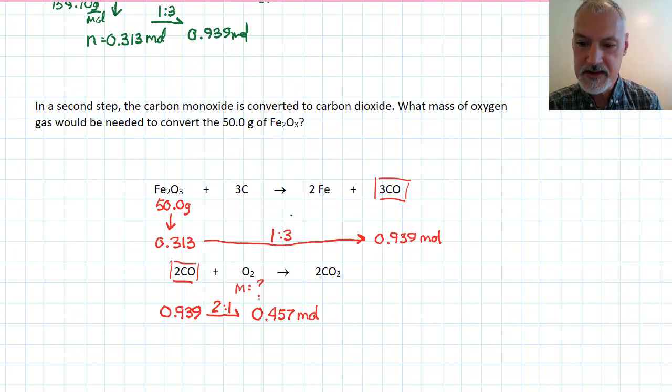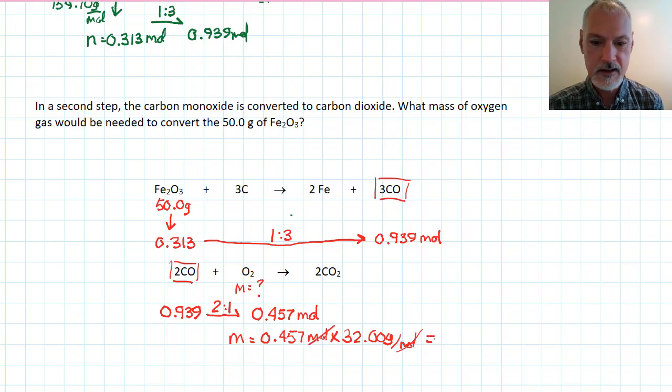And my last step now is to take this and convert it into the mass of oxygen. To do that requires, again, the mass is our number of moles, 0.457 moles. And multiplying it now by the molar mass of oxygen. Remember, it's O2, not just O. 32 grams per mole. Moles will cancel. And I arrive at 15 grams. Three significant digits just to match the three that I have in my givens.